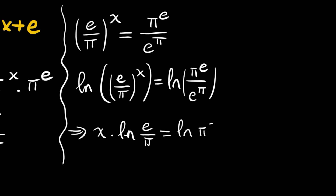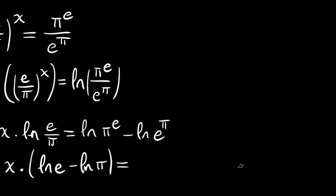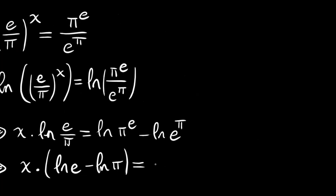The right hand side can be written as ln(pi to the e) minus ln(e to the pi), which can also be written as e times ln(pi) minus pi times ln(e).